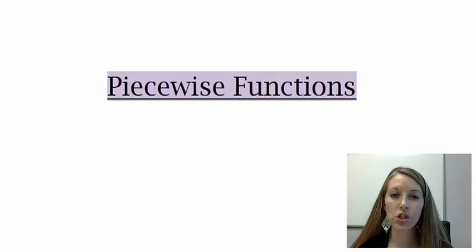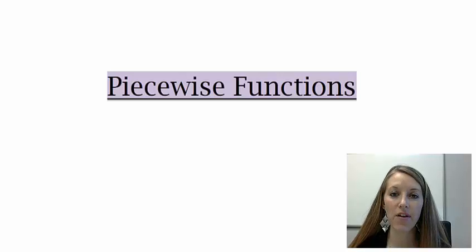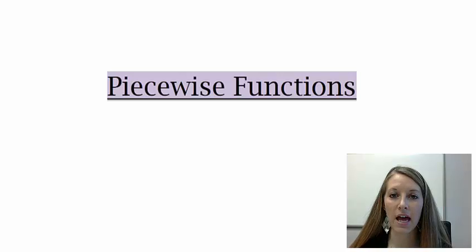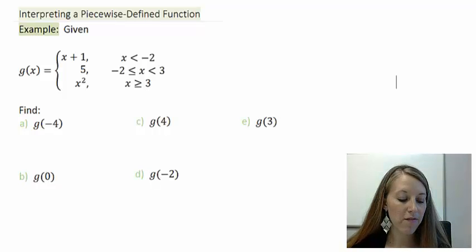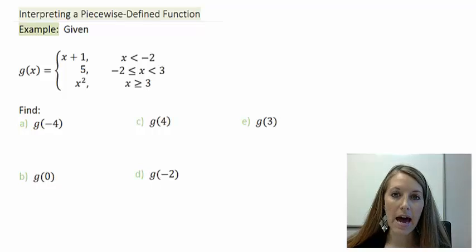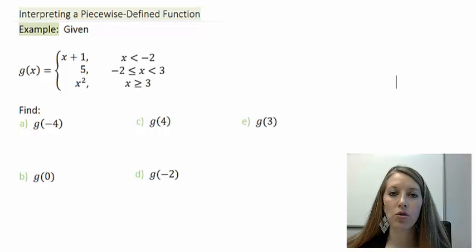We are working with piecewise functions. In the last few videos I did an example where we evaluated at specific values, graphed it by hand, and then double-checked our graph using the graphing calculator. That's what we're going to do again in this video, but with a different piecewise function. Here my function is labeled g of x, and you can see it has three pieces this time instead of two.